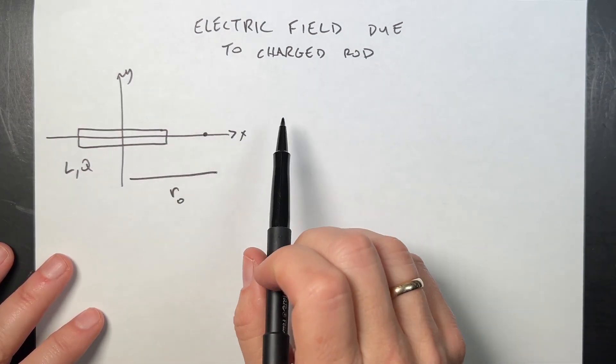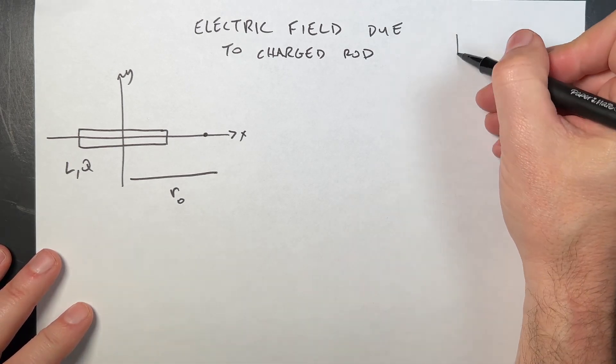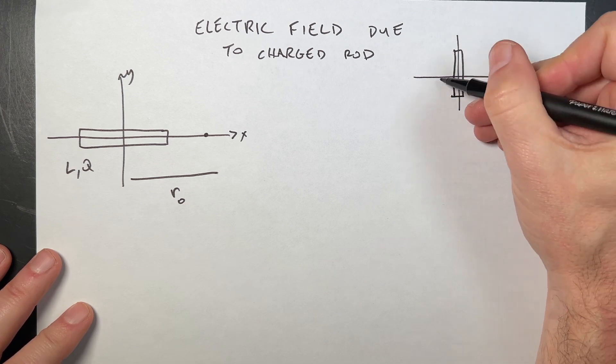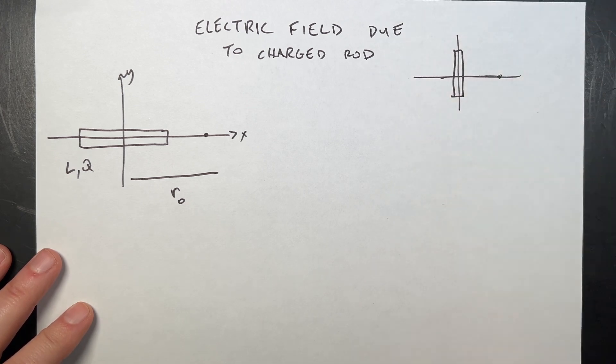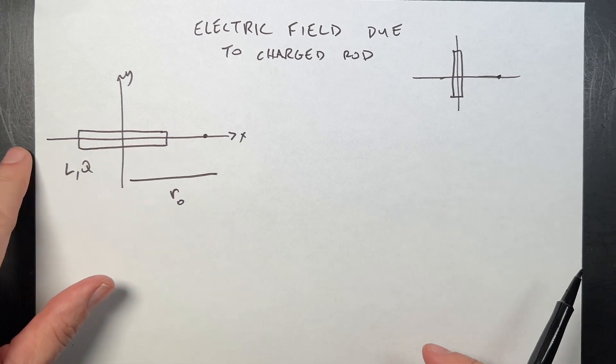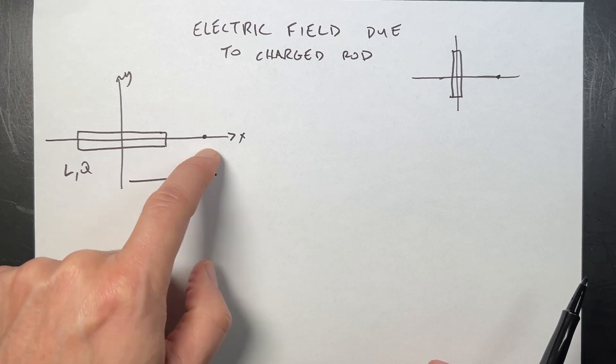You may have seen a problem that says electric field due to a charged rod, but it's not this one. The other one that is commonly done is a rod oriented this way, and you're trying to find an electric field on a point in the middle perpendicular to that axis.